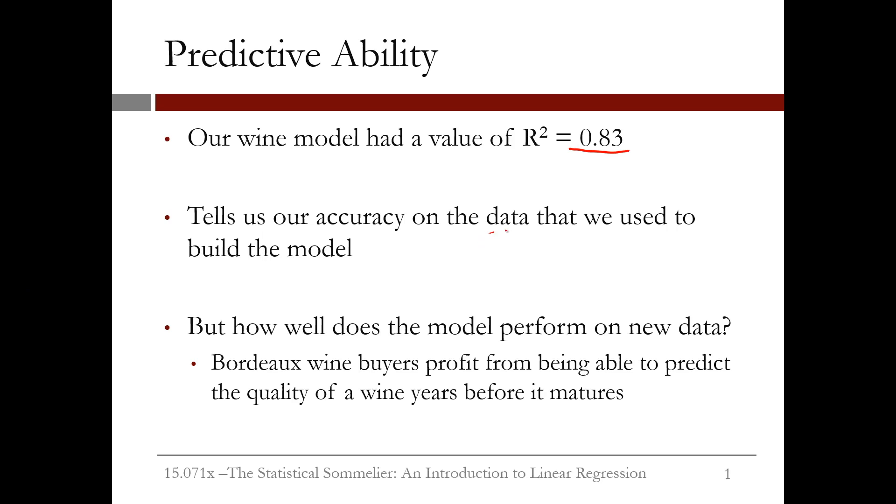The data used to build the model is often called the training data, and the new data is often called the test data. The accuracy of the model on the test data is often referred to as out-of-sample accuracy.